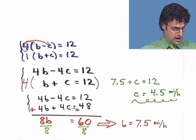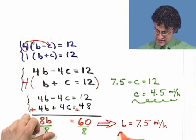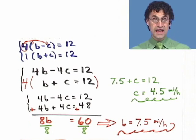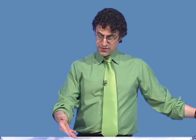And so I see what the current is. It's 4.5 miles per hour. And I see what Ben's rate is. It's 7.5 miles per hour. And we actually use the elimination technique to actually figure out these two velocities by setting up a system of equations. Cool.